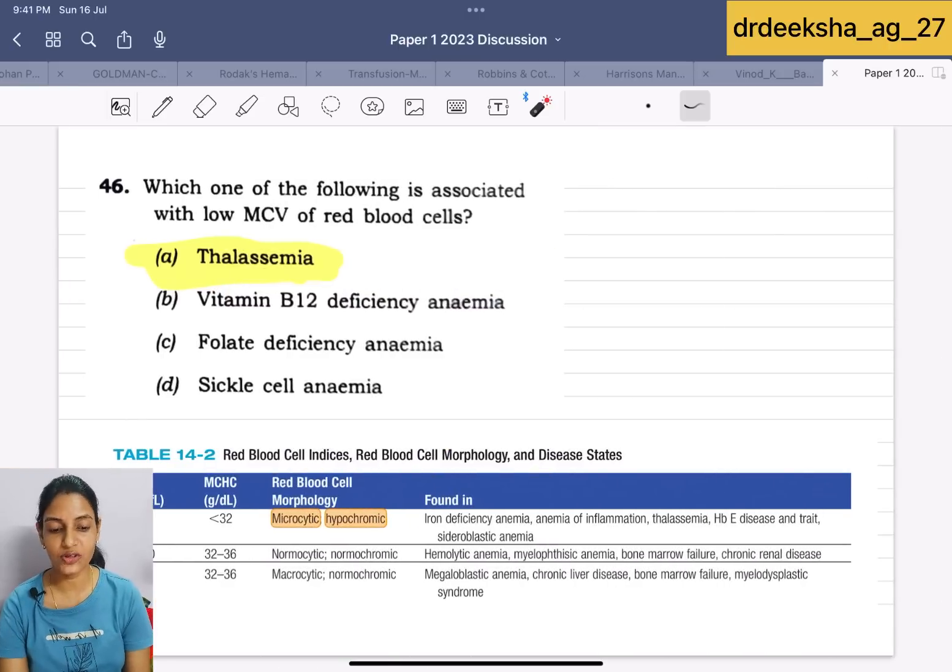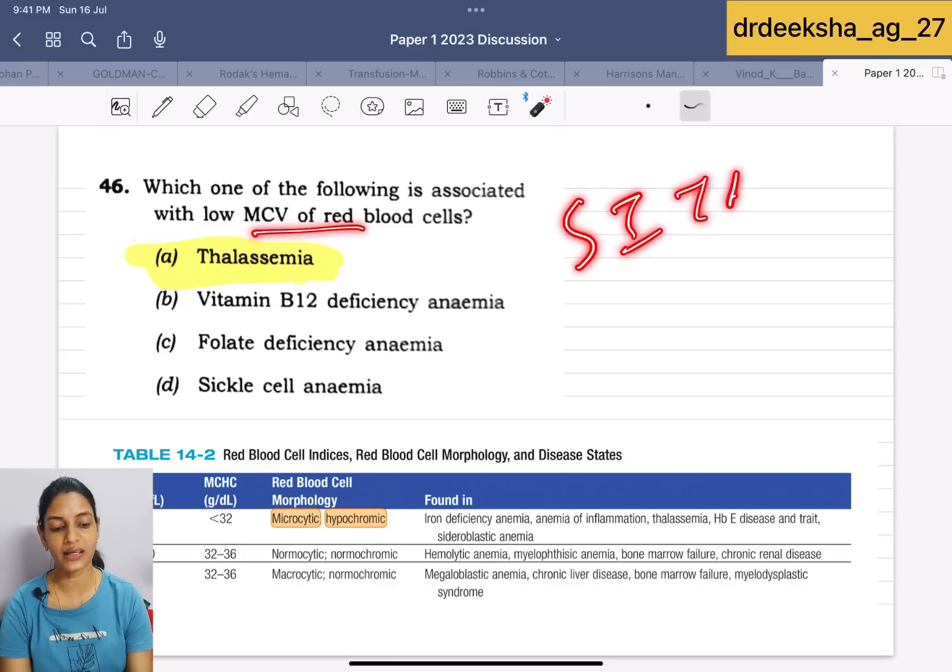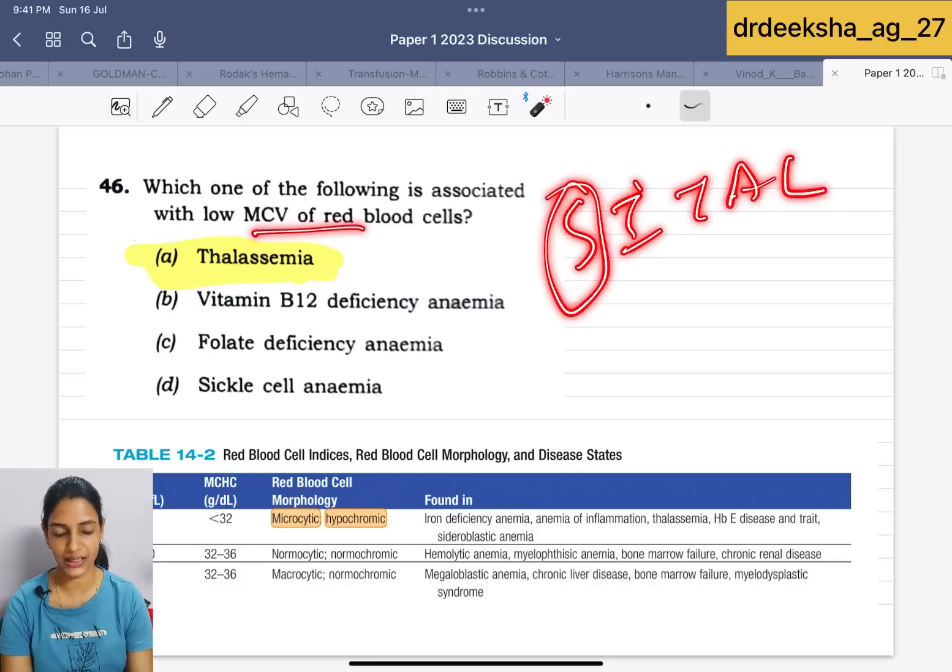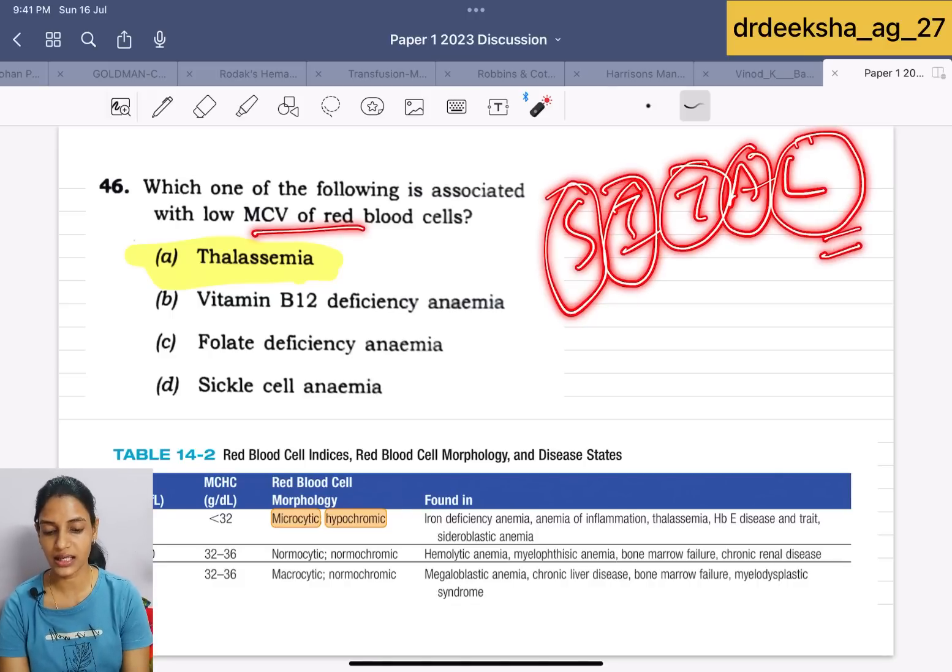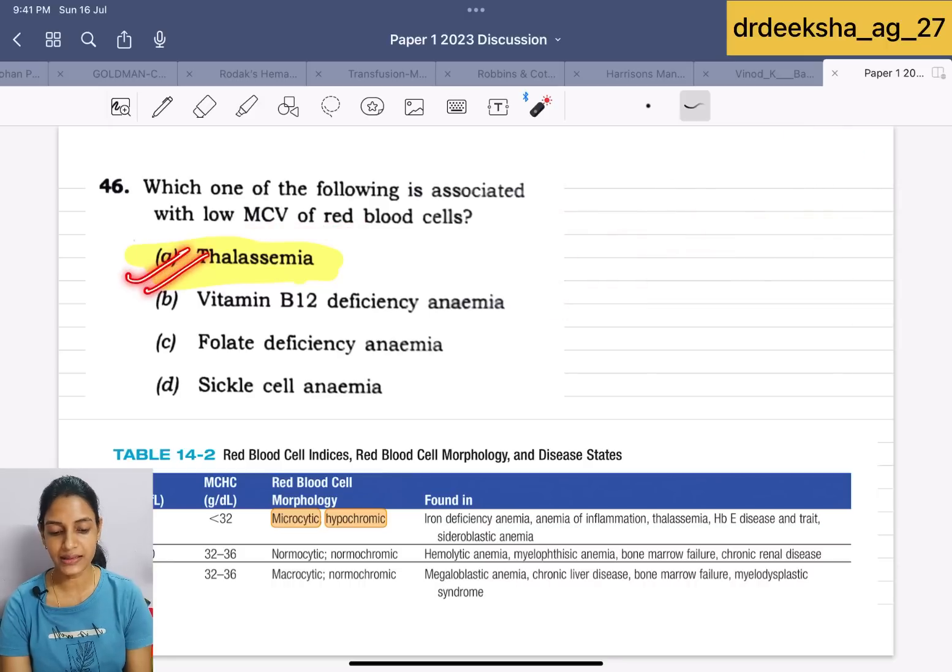Next question they are saying is which of the following is associated with low MCV of red blood cells? Low MCV means microcytic hypochromic they are talking about. We all know the mnemonic for microcytic hypochromic that is CITAL. C for S, sideroblastic, I for iron deficiency, T for thalassemia, A for anemia of chronic disease and L for lead poisoning. The answer in this case will be thalassemia. While sickle cell anemia comes under the normocytic, normochromic under the hemolytic anemia and vitamin B12 folate are the macrocytic. Answer for this is thalassemia.